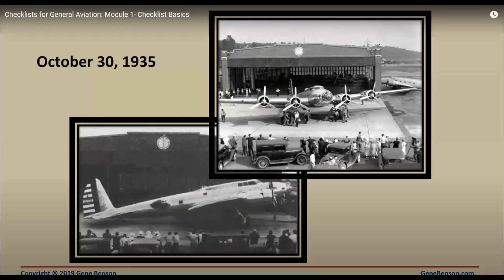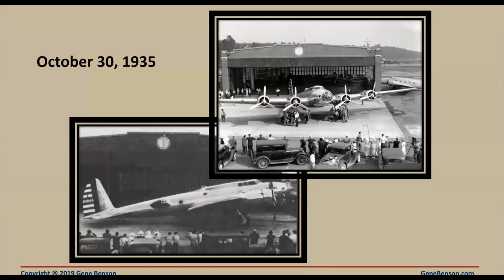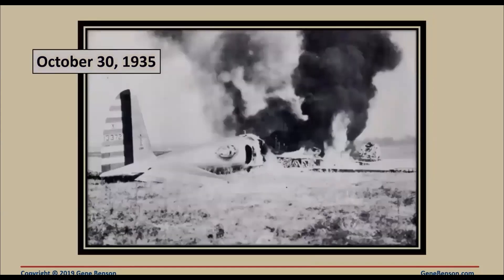On October 30th, 1935 at Wright Airfield in Dayton, Ohio, the U.S. Army held a flight competition for airplane manufacturers vying to build its next generation long-range bomber. It wasn't supposed to be much of a competition — in early evaluations the Boeing Model 299 had outscored Martin and Douglas. Boeing's planes could carry five times as many bombs as the Army had requested, fly faster than previous bombers, and almost twice as far. The competition was to be merely a formality — the Army planned to order at least 65 aircraft.